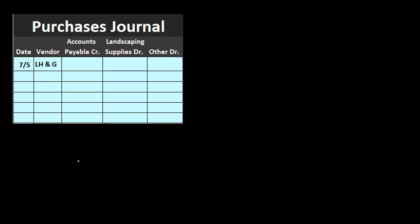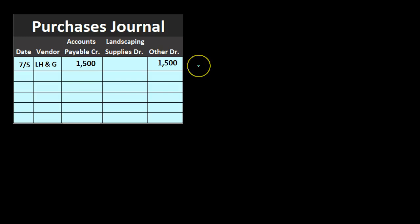Our first transaction is for vendor LHNG on the 7th, with $1,500 purchased from them — the other side going to 'other' since it's not a normal account like landscaping supplies. With the purchases journal, we are always dealing with accounts payable, so we always credit accounts payable. We then make additional columns for the debit accounts used most often, such as landscaping supplies.